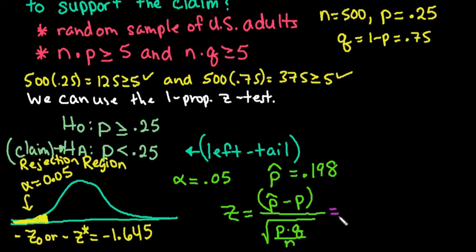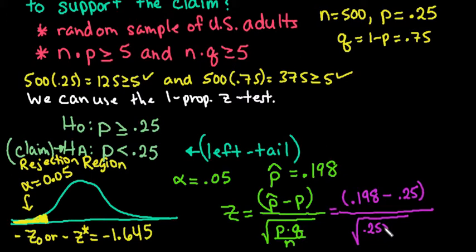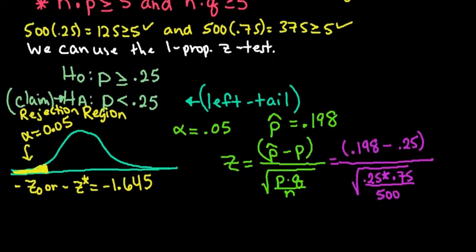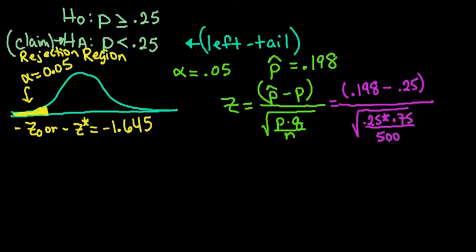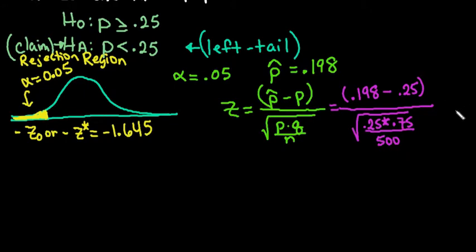Let's go ahead and show out our work for this. Our p-hat is going to be 0.198 minus our p, which is 0.25. And then we would use 0.25 times 0.75 divided by 500. In the denominator, make sure that you are using p and q and not p-hat and q-hat. I know in one-proportion z intervals, you use p-hat and q-hat. So it does change for the one-proportion z intervals.